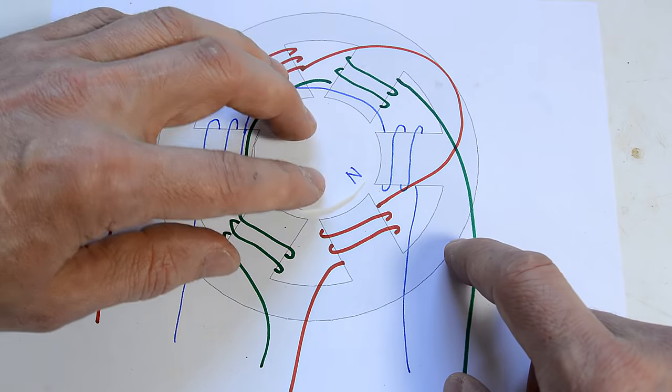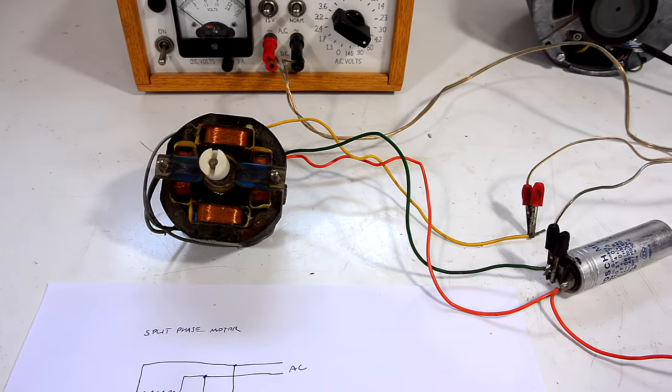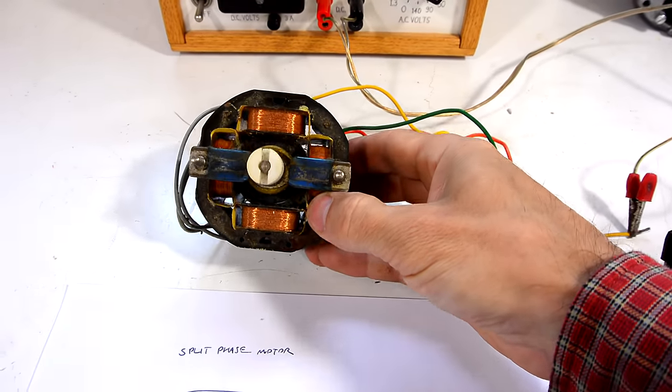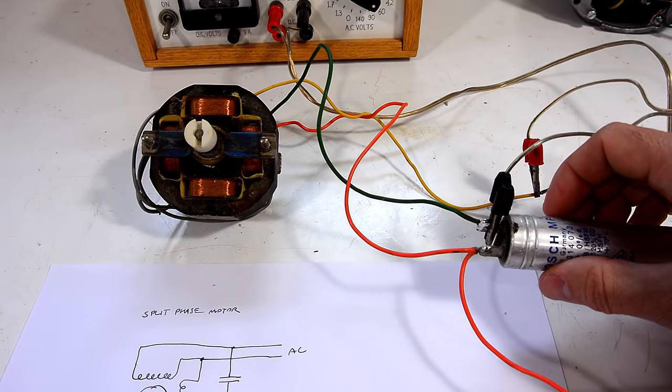For three phase motors, the sense of rotation is inherent in the three phases coming into the motor. But for a single phase motor, like this split phase induction motor, a sense of rotation has to be created with a bit of trickery using a capacitor.